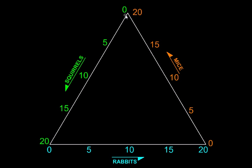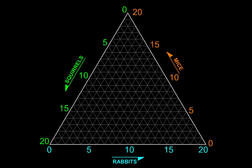So here is the variation of squirrels from 0 to 20, rabbits 0 to 20, and mice 0 to 20. And the interior of this equilateral triangle can be filled with grid lines like this which are parallel to the sides of the triangle.